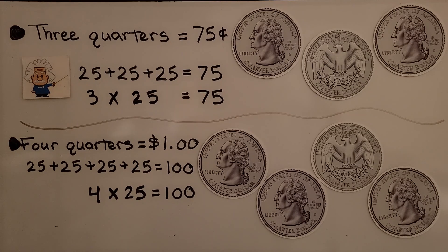Three quarters is equal to 75 cents, 75. So, 25 plus 25 plus 25 is equal to 75. Or, three times 25 is equal to 75.